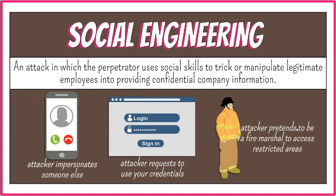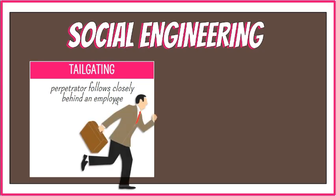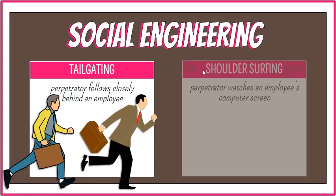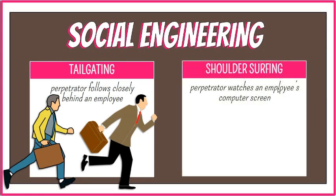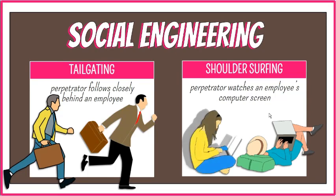The attacker may also pretend to be an exterminator, an air conditioning technician, or a fire marshal to access the organization's restricted areas. Tailgating is a technique designed to allow the perpetrator to enter restricted areas controlled with locks or card entry — the perpetrator follows closely behind a legitimate employee and asks him to hold the door. Shoulder surfing occurs when a perpetrator watches an employee's computer screen over the employee's shoulder, and is particularly successful in public areas such as airports and train stations.